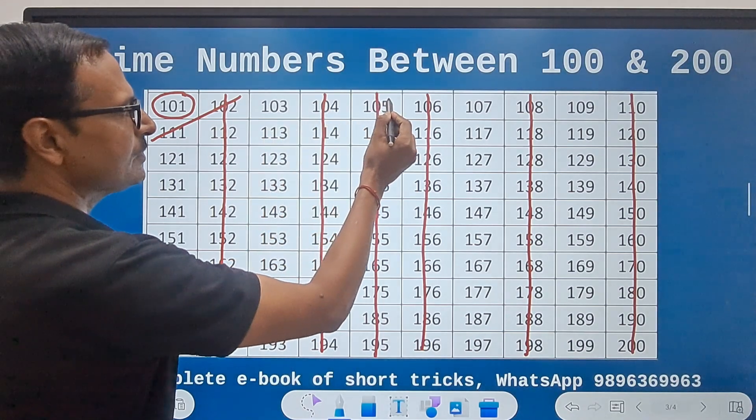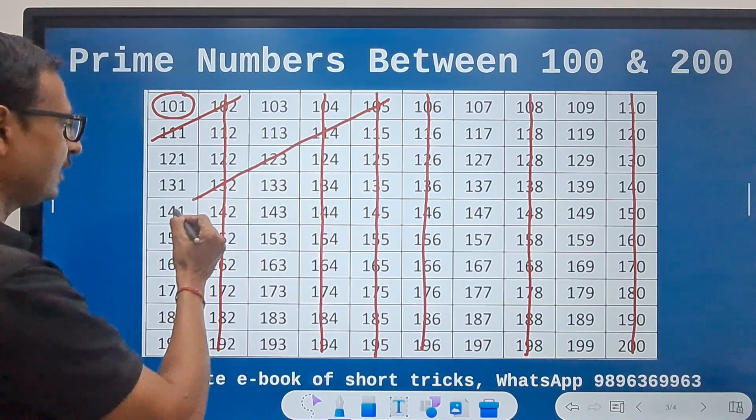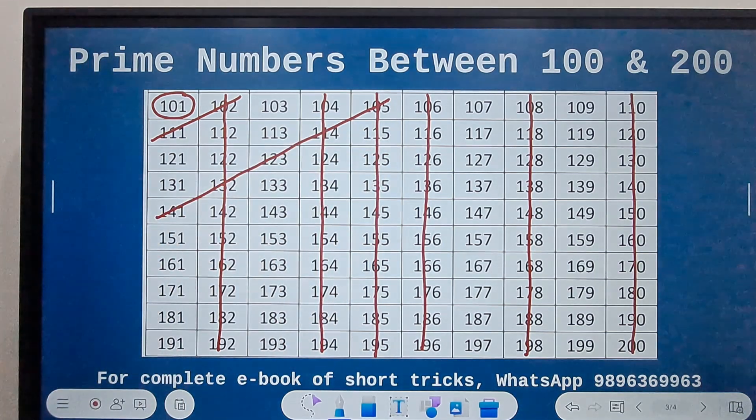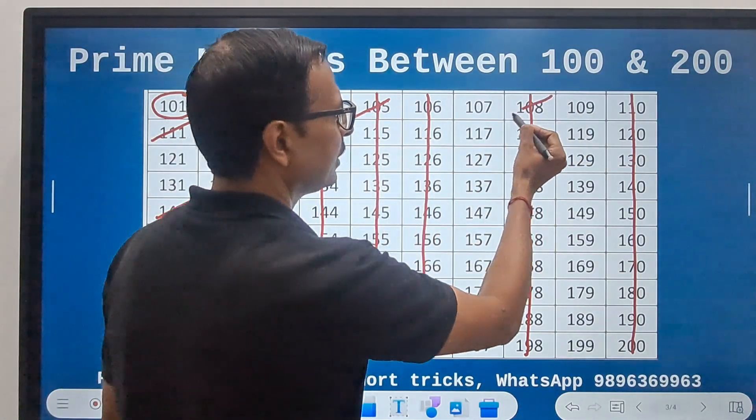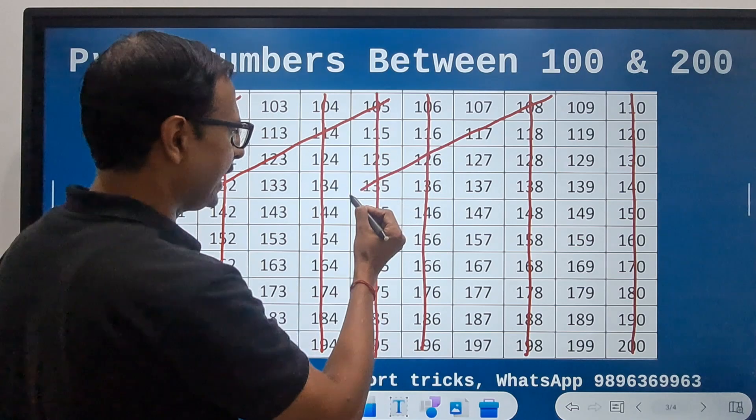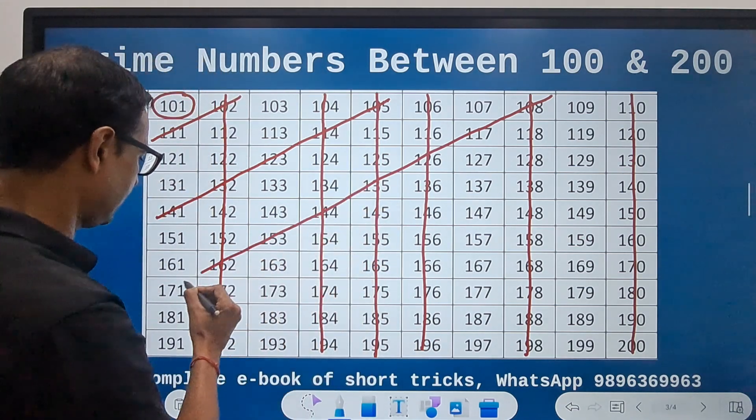This is not prime, and the diagonal, the complete diagonal, is ruled out. Likewise, leave two more and start from 108 and rule out the diagonal like this.